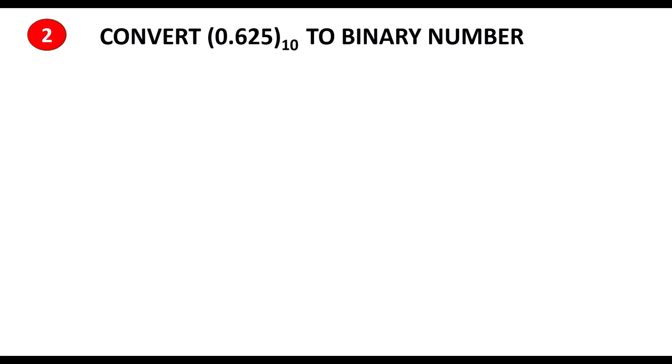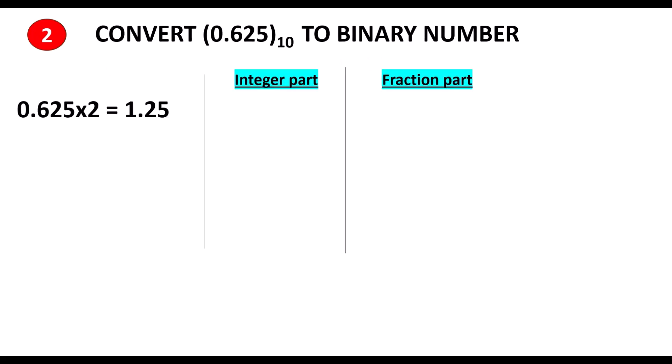Here we are going to see how the fraction part of a decimal number is converted to binary form. We use the repeated multiplication method — we repeatedly multiply the number by 2, because the base of binary is 2. We take the number 0.625 and multiply by 2, so we get 1.25.